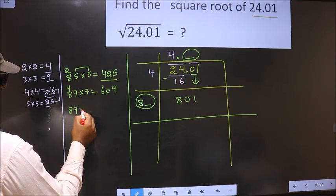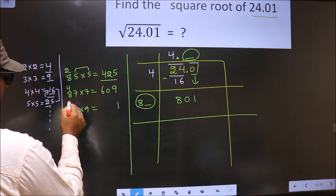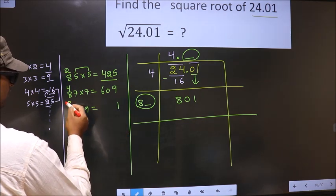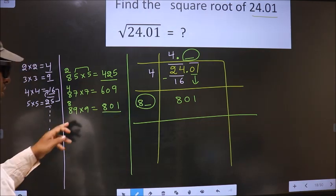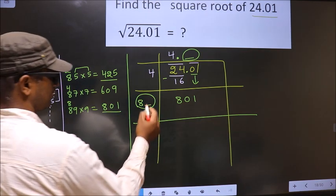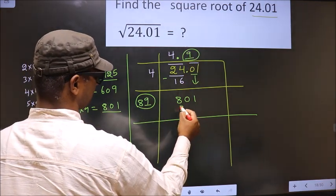Let us take 9. 9 into 9, 81. So 89 times 9, 72 plus 8, 801. We got exact 801 for the number 9. So we take 9 here, 9 here and 801 here.